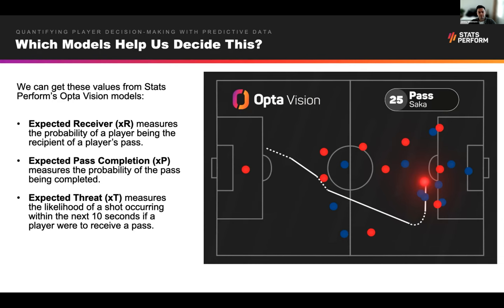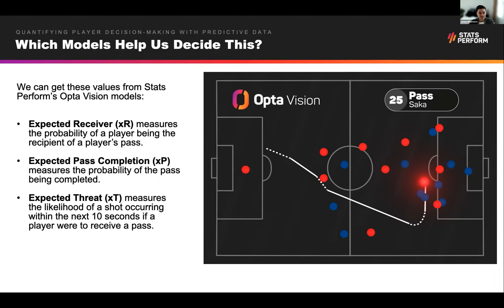To measure this, we can use three different models. Just to remind you: how likely, how difficult, and how threatening. The expected receiver model measures the probability of a player being the recipient of a pass — so in a typical situation, how likely is each of those passes to be made.